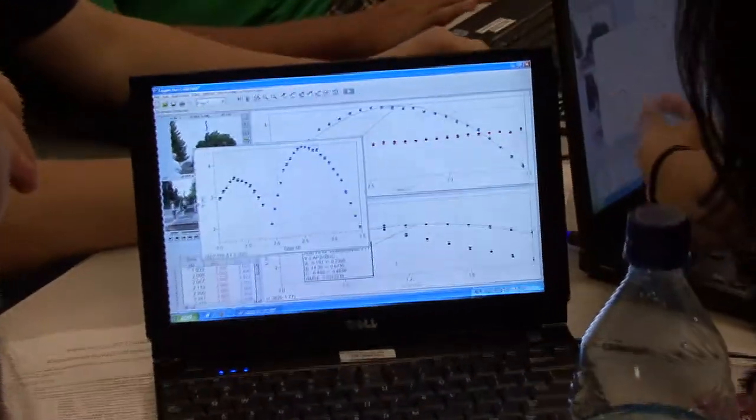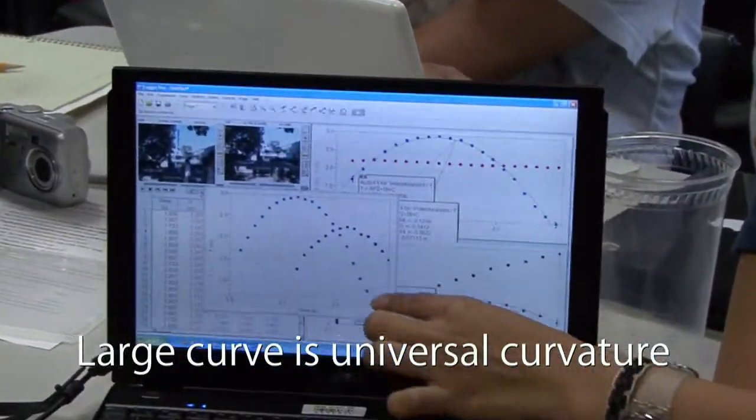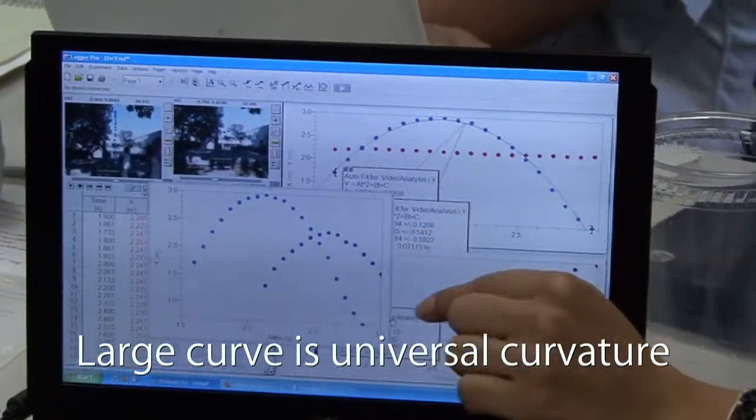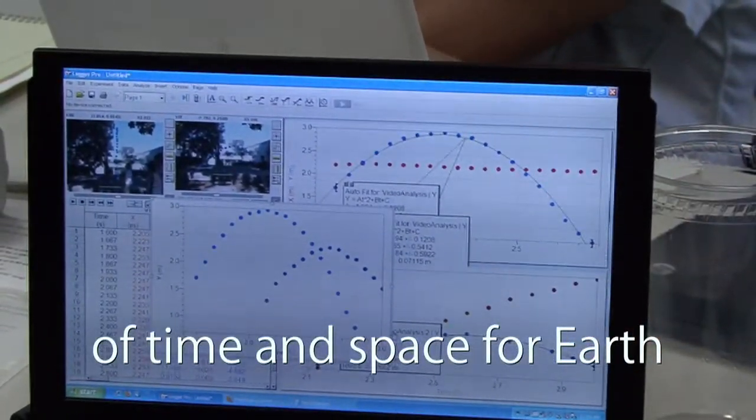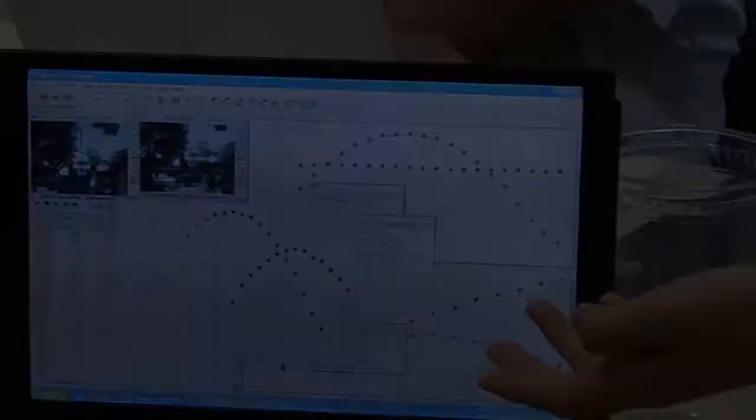So that big curvature that you see, that is the universal curvature of time and space for Earth, because every planet has unique gravity.